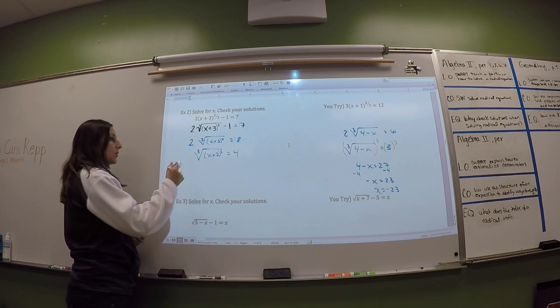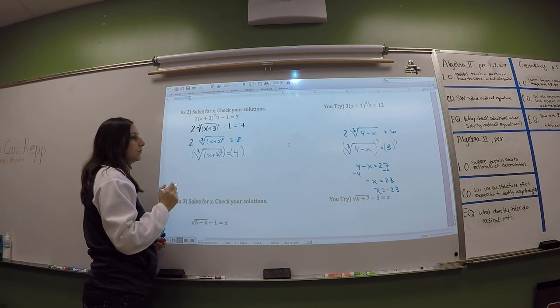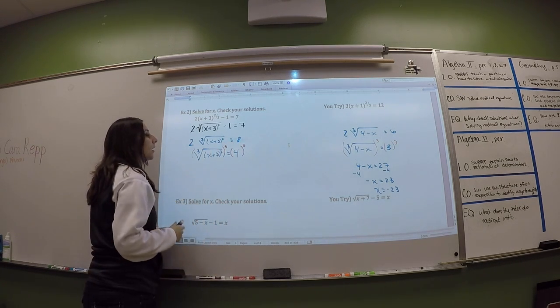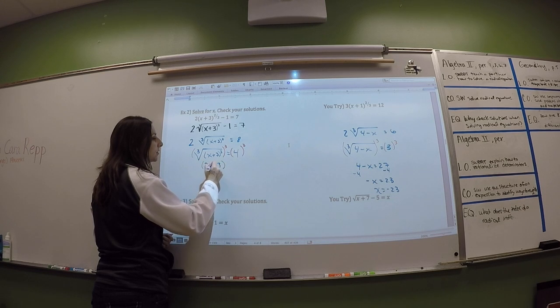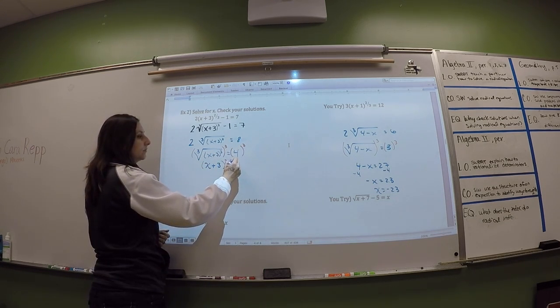We're going to do this in two steps. So how do we get rid of the cube root? Cube the other side. Cube both sides, technically. We're going to get x plus 3 squared equals, what's 4 cubed? 64.